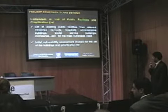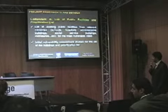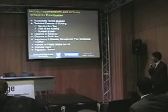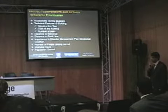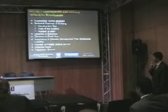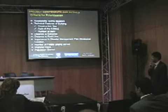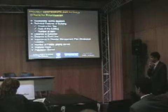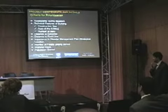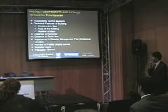In Component A, the list of existing public facilities will be gathered — including schools, hospitals, administrative buildings, social service buildings, and dormitories — and a vulnerability assessment will be conducted to create the prioritization list. The prioritization criteria include: accessibility during disaster, technical features of the building such as construction year, building type, and number of stories, distance to epicenter, distance to fault lines, importance in the disaster management plan, number of people served, working hours, and population served.